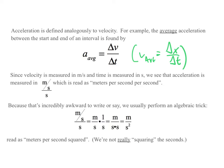Since velocity is measured in units of meters per second and time is measured in seconds, we see that acceleration is measured in meters per second per second, m over s over s. But because that's incredibly awkward to write or to say, we usually perform an algebraic trick. We take meters per second over seconds, keep the first fraction, invert the second fraction, and multiply. So we have meters per second times one over seconds, which is meters over seconds times seconds, and then anything times itself we write as a square, so we end up with the traditional unit of meters per second squared.